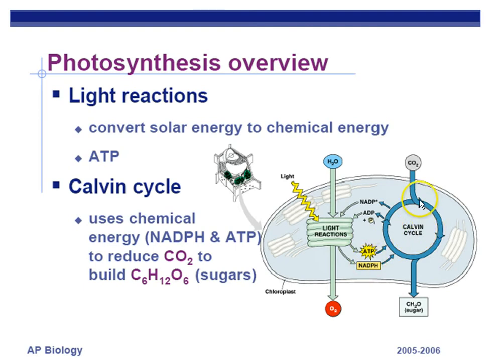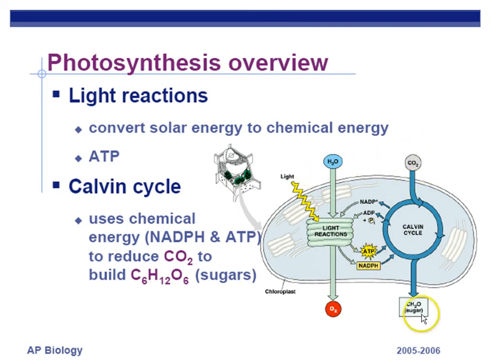The energy for the Calvin cycle comes from the light reactions — ATP and NADPH — but the raw material for the sugars comes from carbon dioxide gas. Make sure you know what goes in and out of each of these two steps as a general overview.